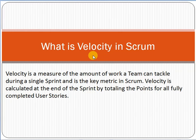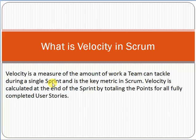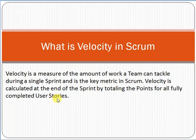What is basically velocity? Velocity is a measure of the amount of work a team can tackle during a sprint, and it is the key metric in Scrum. A sprint is basically around a four-week time-boxed period in which we have to deliver a project. Velocity is calculated at the end of a sprint by totaling the points for all fully completed user stories.